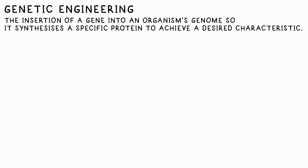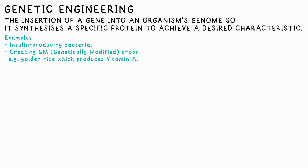Advancements in biology mean we can also genetically modify organisms when selective breeding is too slow or can't achieve what we want. For example, scientists have genetically modified bacteria to produce insulin, which can be harvested to treat people with diabetes. Genetically modifying crops can boost their yields or nutritional value — for example, golden rice has a gene inserted that produces vitamin A, developed to combat vitamin A deficiency. Other GM crops have been modified to be more resistant to diseases.